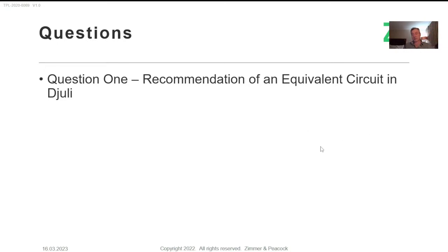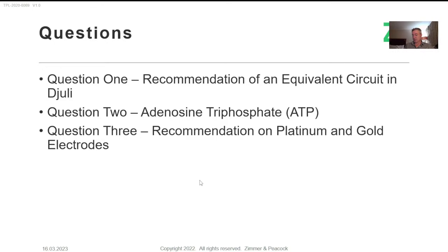The first question is about recommendation on equivalent circuits in Julie. So if you're making an immunosensor on gold, for example, you may be using differential pulse voltammetry, but you may also be using electrochemical impedance spectroscopy, and equivalent circuits then become a useful tool. So I will touch upon equivalent circuits in Julie.